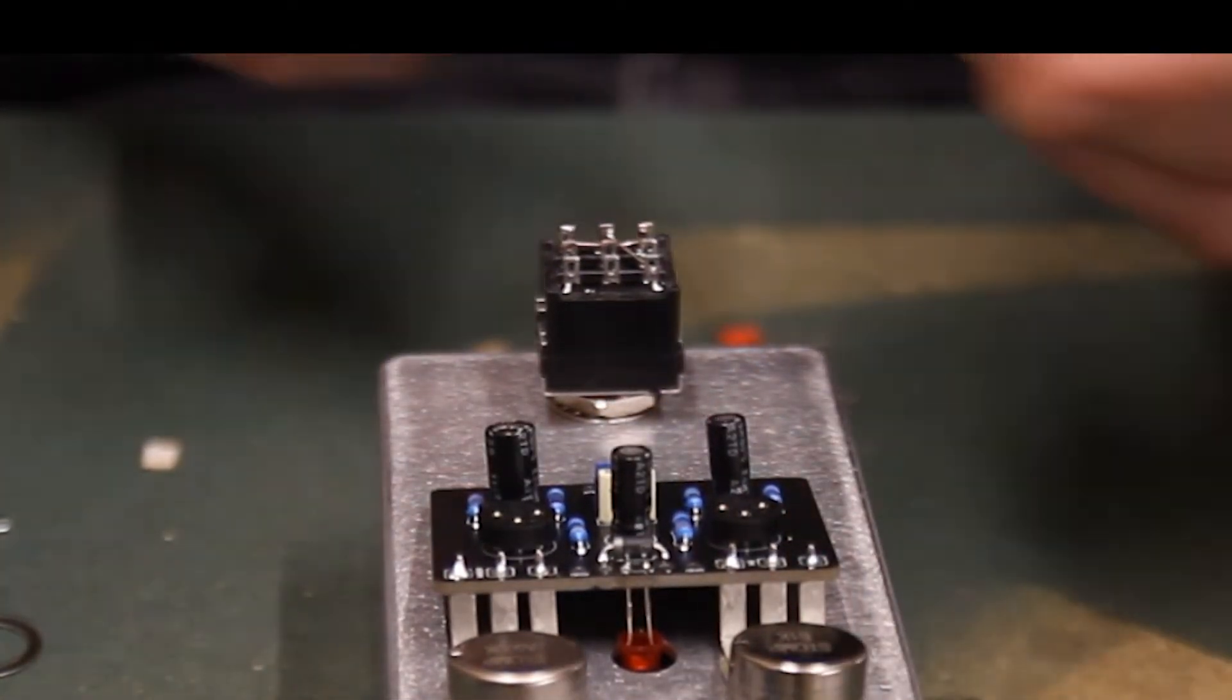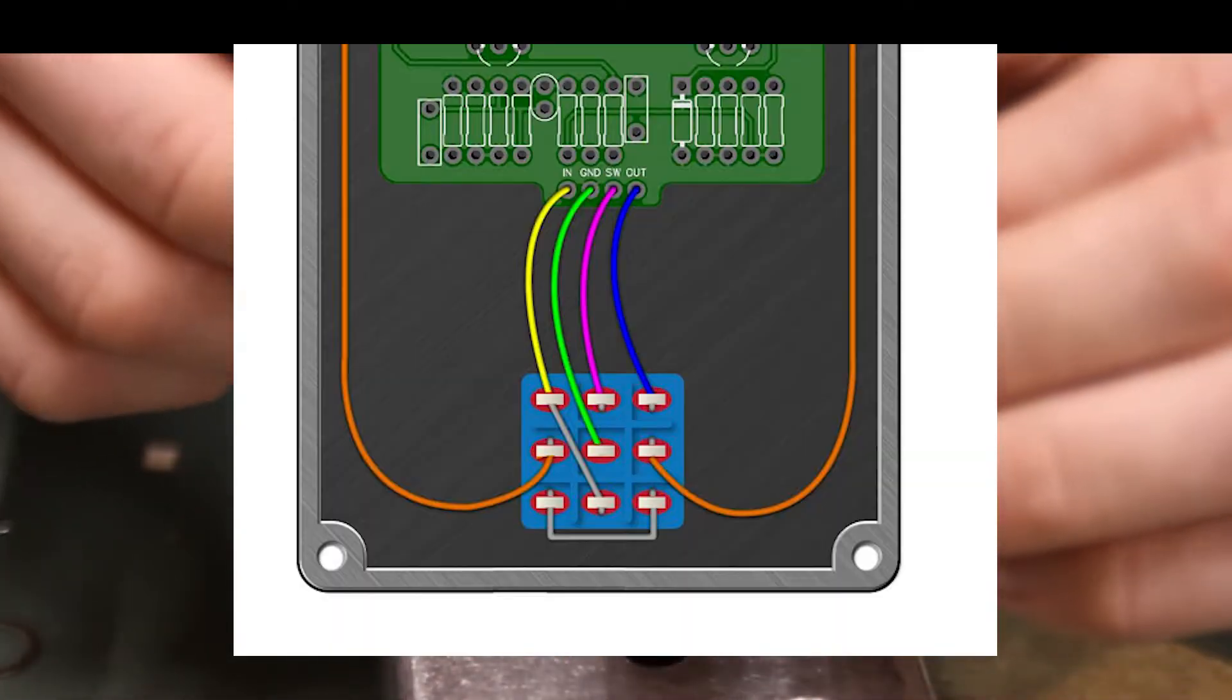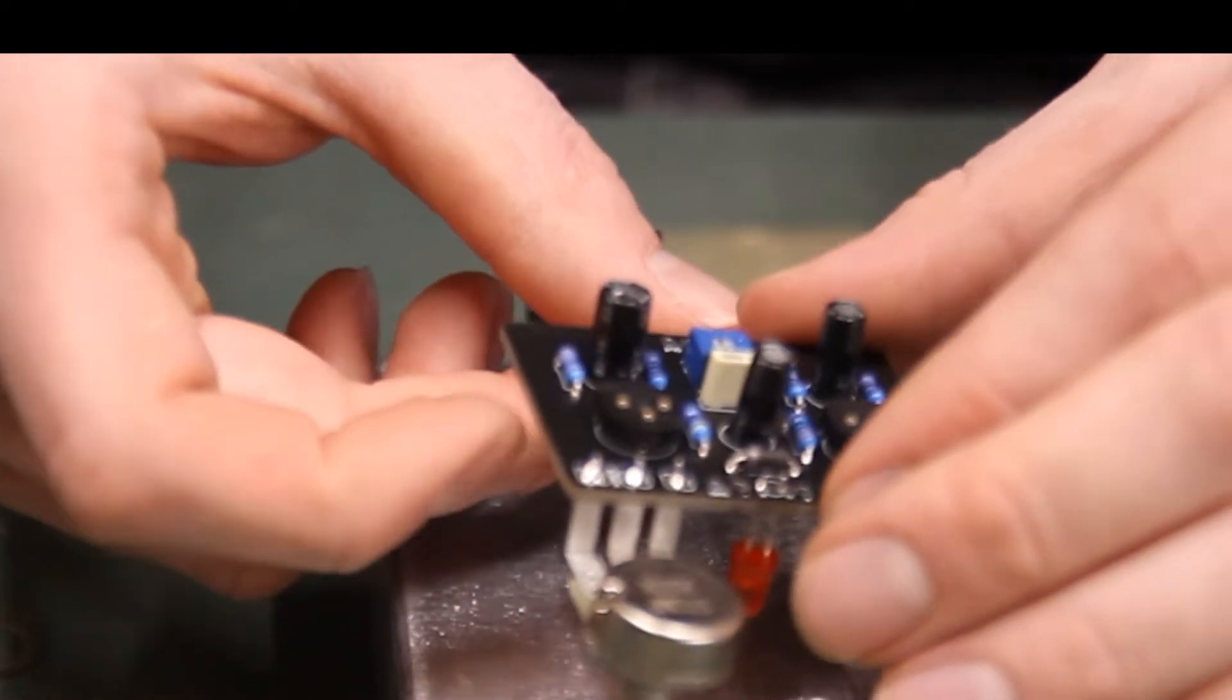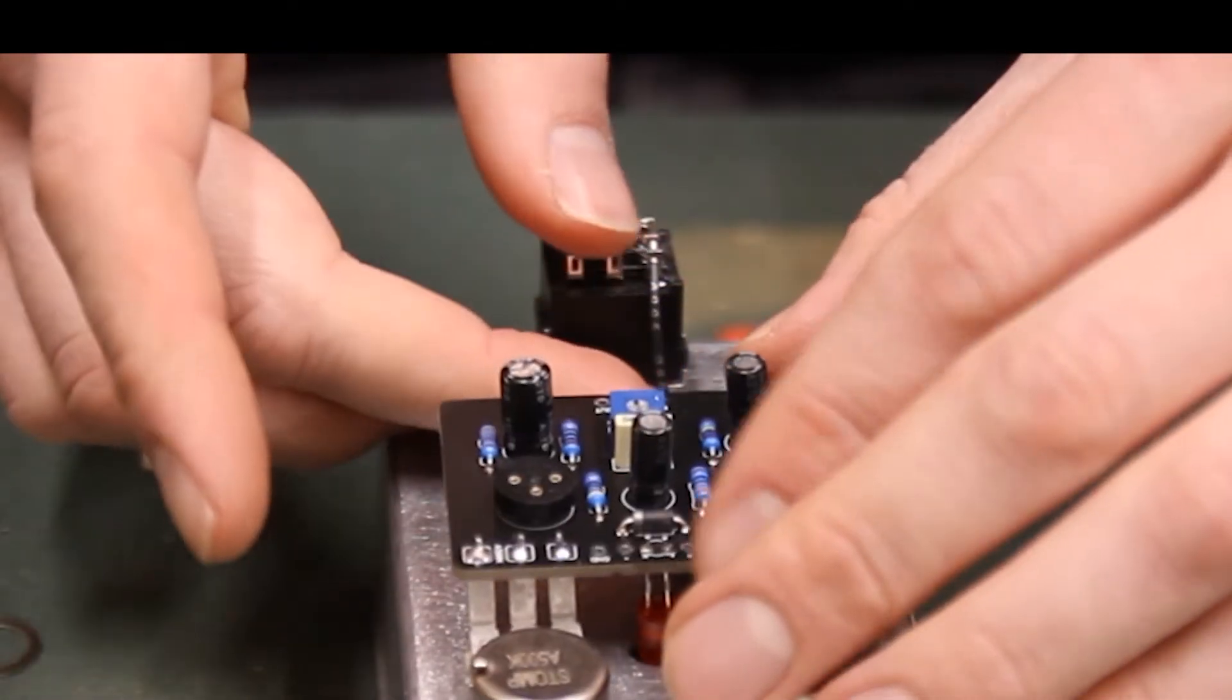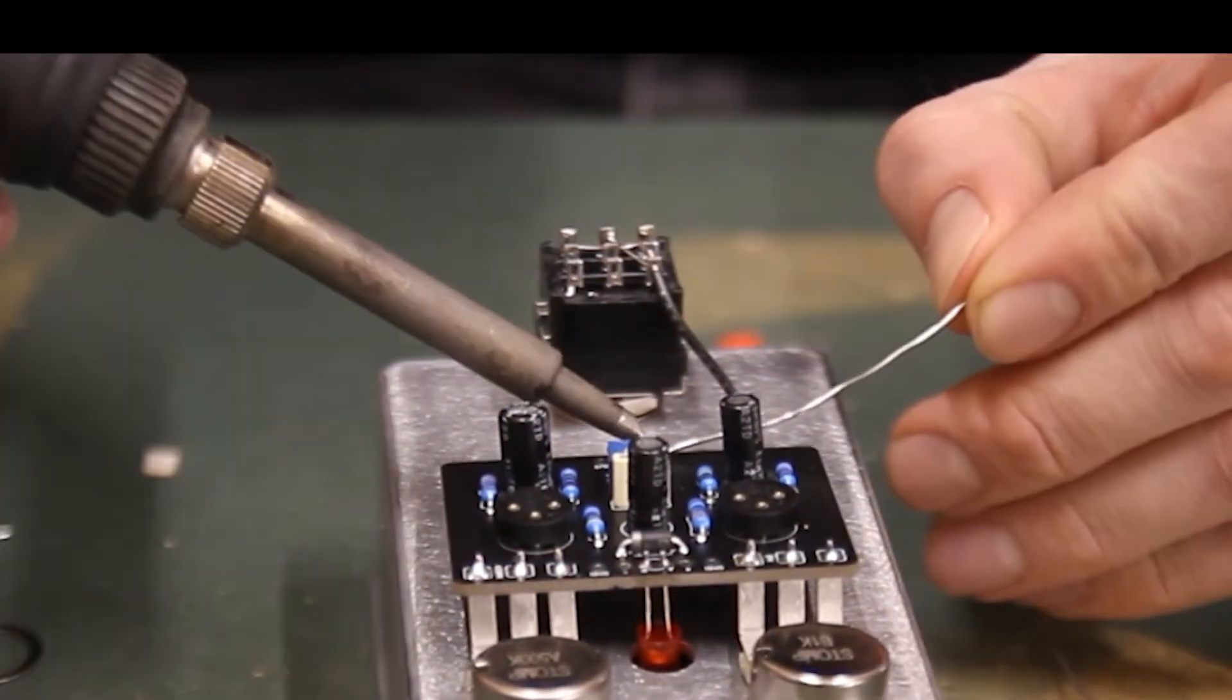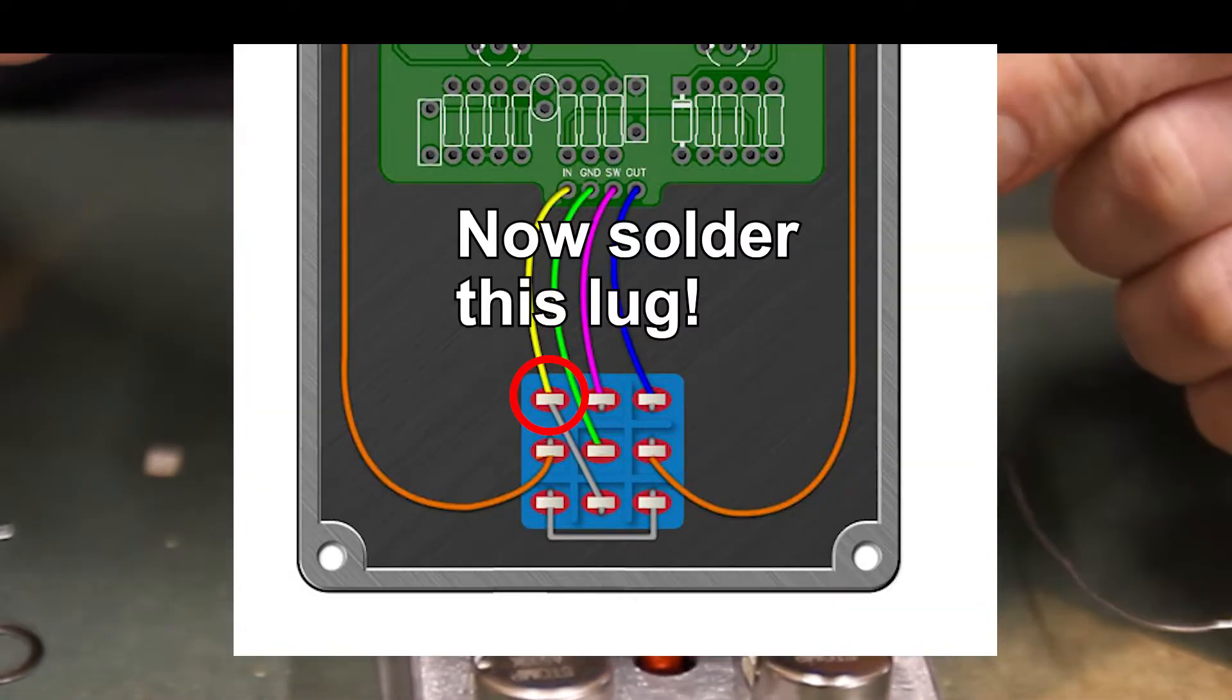Now grab one of the short wires from the bag of pre-cut wire. We're going to install this wire in place of the yellow wire in this diagram. Insert the wire from the bottom of the pad labeled IN and run the other end to the lug with the unsoldered jumper wire. Solder in the wire to the board and now solder the wire and jumper wire to the lug of the switch.